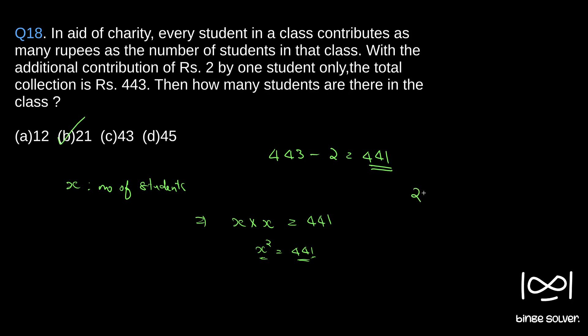21. You can check if you want, 21 into 21, which is 21, 2 and 4. So 1, 441. So we have 21 square is 441.